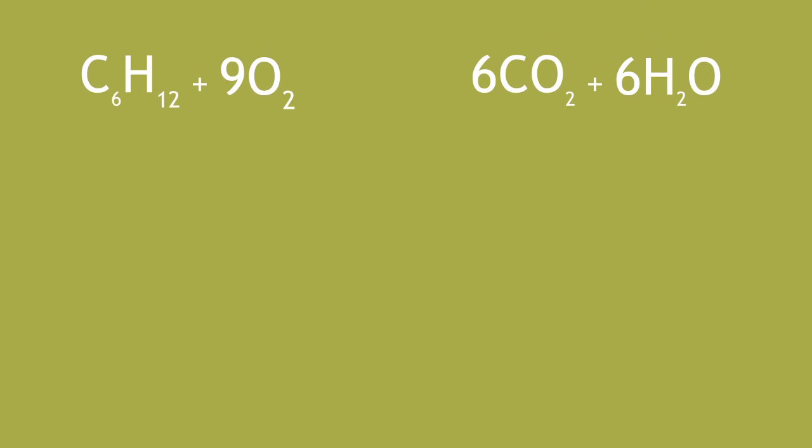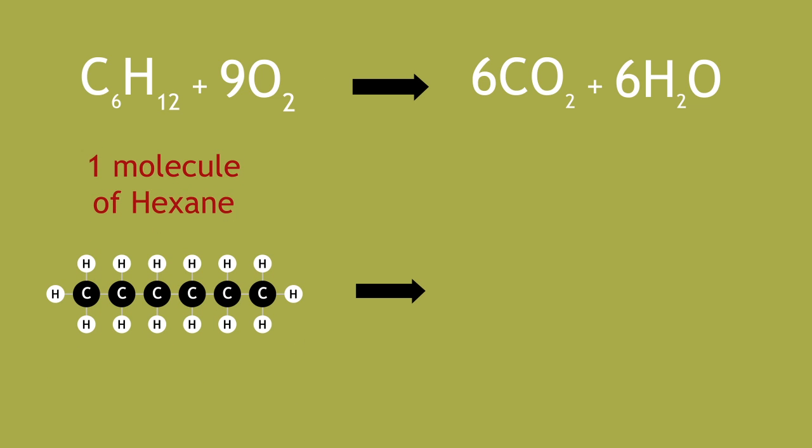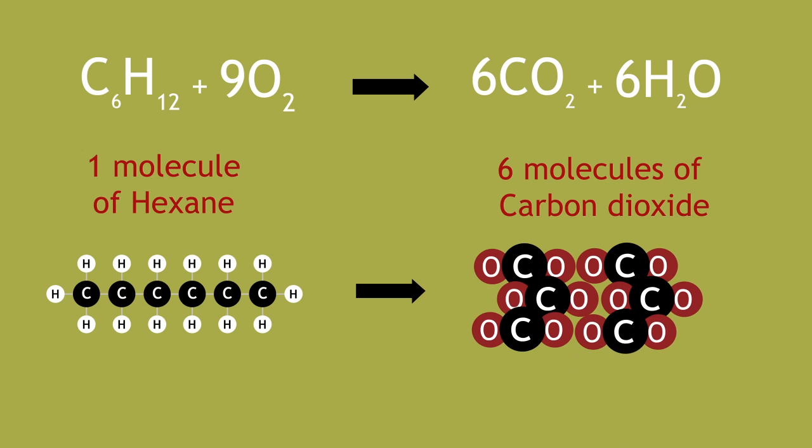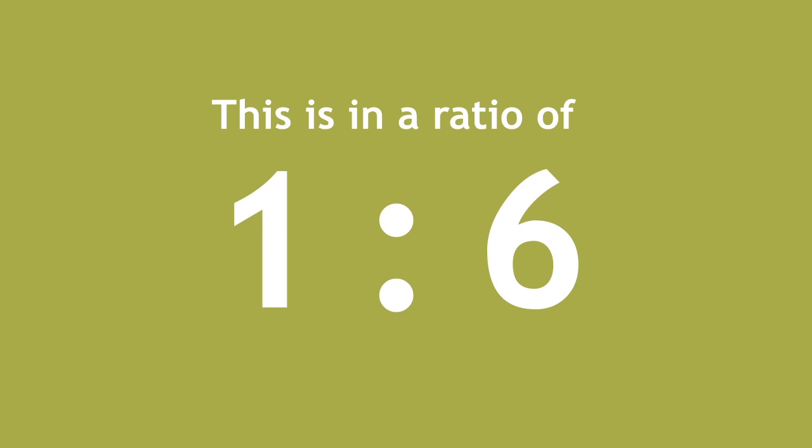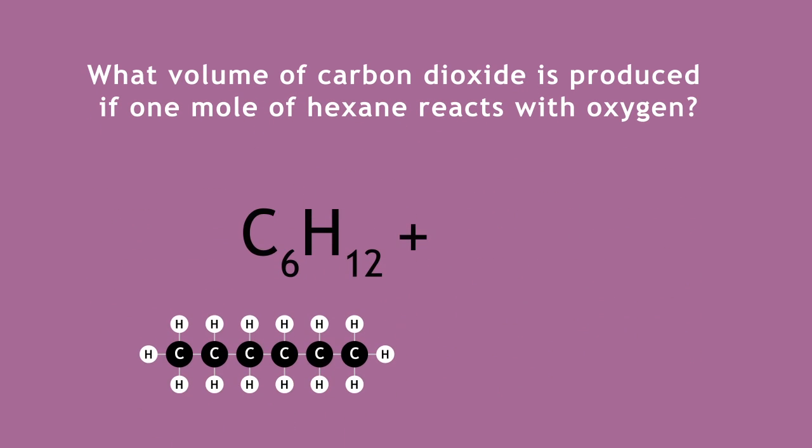The equation tells us that for one molecule of hexane, one mole, that's six molecules or six moles of carbon dioxide produced. So, this is in a ratio of one to six. Therefore, what volume of carbon dioxide do you think is produced if one mole of hexane reacts with oxygen?